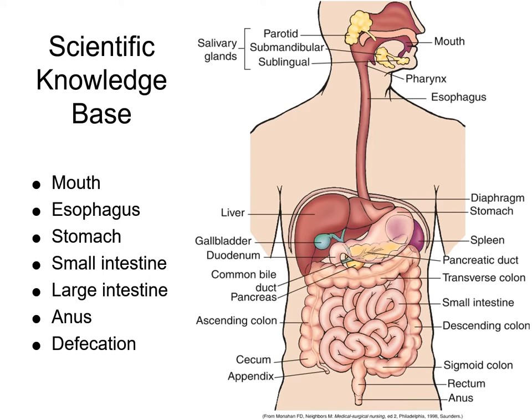The GI tract is an alimentary canal and its accessory organs. The alimentary canal is a single tube extending from the mouth to the anus, including the mouth, esophagus, stomach, and intestines. The accessory organs are the teeth, tongue, salivary glands, liver, pancreas, and gallbladder. These organs absorb fluid and nutrients, prepare food for absorption, and provide temporary storage of feces. The GI tract absorbs high volumes of fluids, making fluid and electrolyte balance a key function. It also receives secretions from the gallbladder and the pancreas.